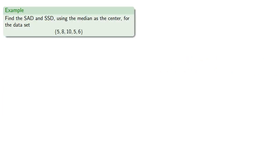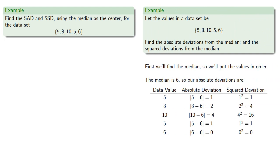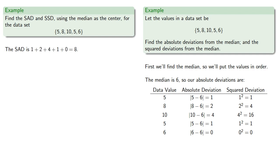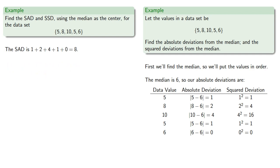Let's find the SAD (sum of the absolute deviations) and the SSD (sum of the squared deviations), using the median as center for our data set 5, 8, 10, 5, and 6. We've already computed the absolute and squared deviations, so let's pull in those numbers. The sum of the absolute deviations is 1 + 2 + 4 + 1 + 0 = 8. And the sum of the squared deviations is 22.